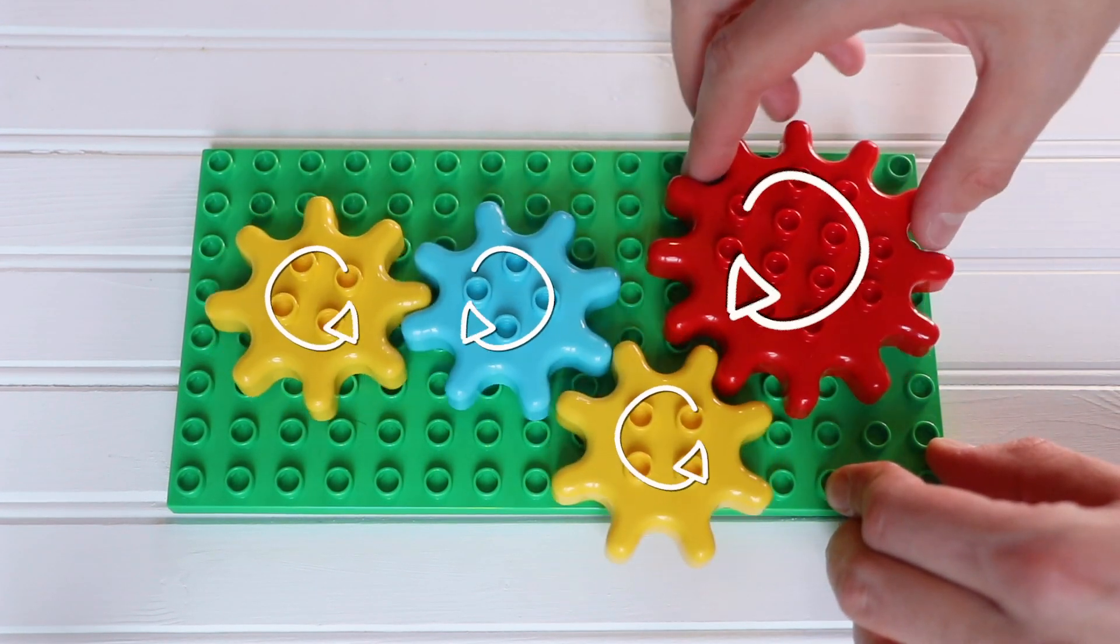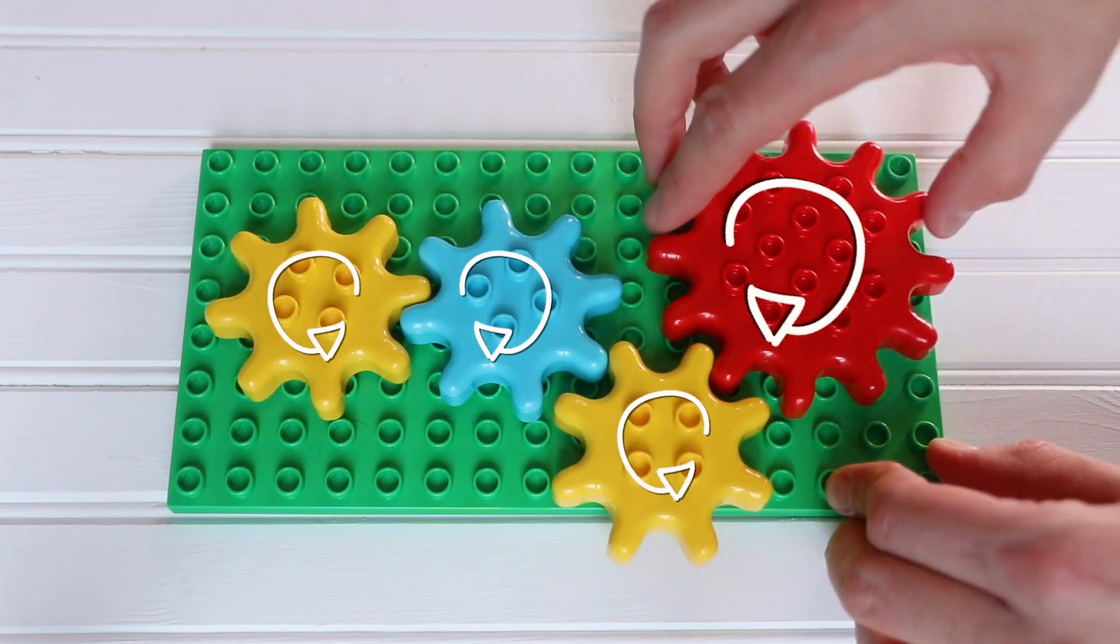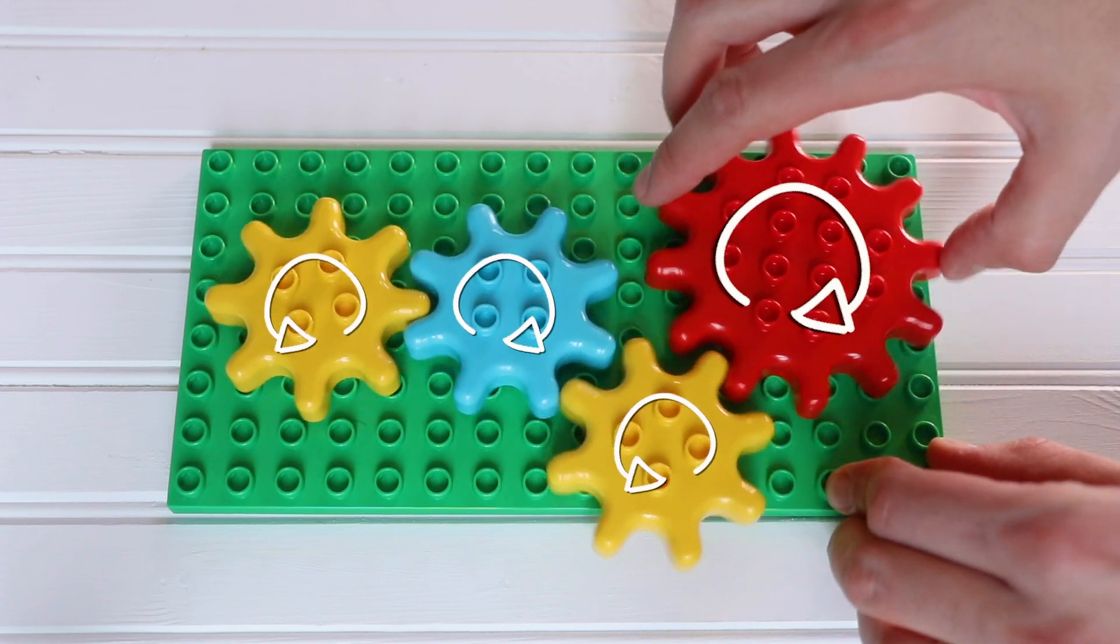Now get your kids to spin one of the gear wheels to demonstrate how it changes the direction of the other gear wheels in the chain.